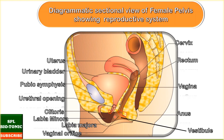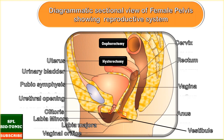Many terms are associated with this system: oophorectomy means removal of ovaries; hysterectomy refers to removal of the uterus; tubectomy is cutting the fallopian tube and joining its loose ends; and colpectomy is the removal of the vagina.